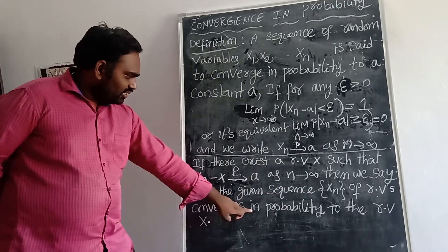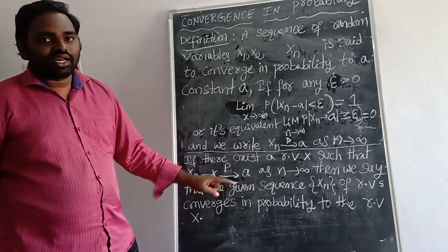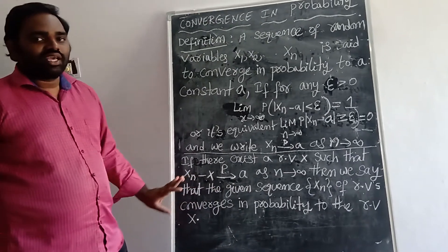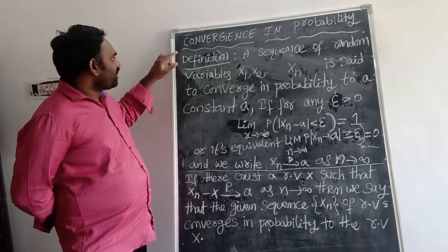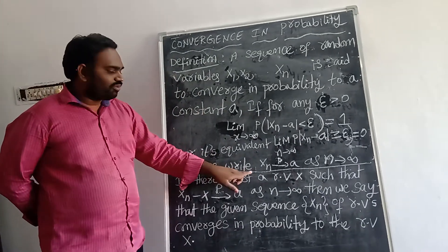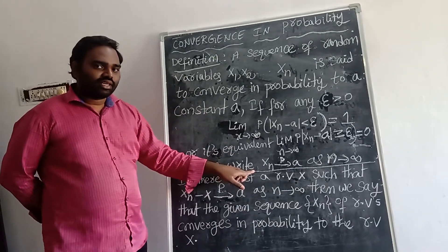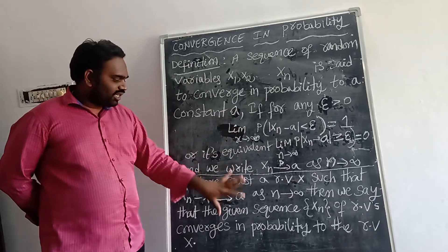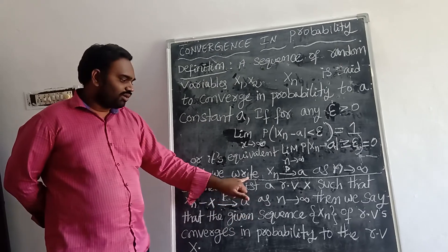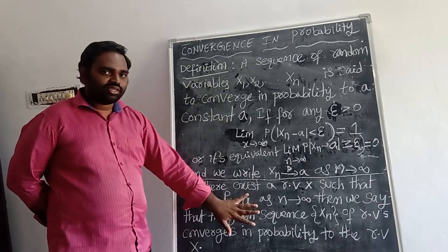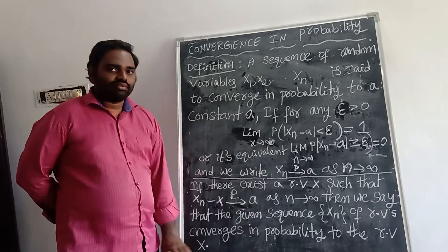then we say that the given sequence Xₙ of random variables converges in probability to the random variable X. So in examination, the definition is right here, from here up to here. This is the exact definition. For explanation purposes I've given this definition also. You can compare this for examination. Thank you.